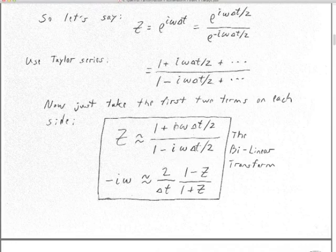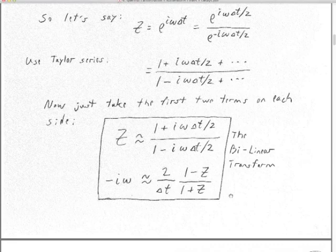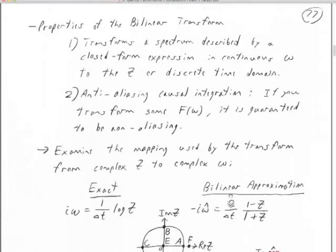We can solve this for minus i omega: it's approximately 2 over delta t times (1 minus z) over (1 plus z). Wherever we see minus i omega in our closed-form desired spectrum, we substitute this z polynomial — which at least only has two terms in the denominator, not infinite terms. So the bilinear transform takes a closed-form expression for a desired spectrum in continuous omega and transforms it to the z domain into a rational filter.